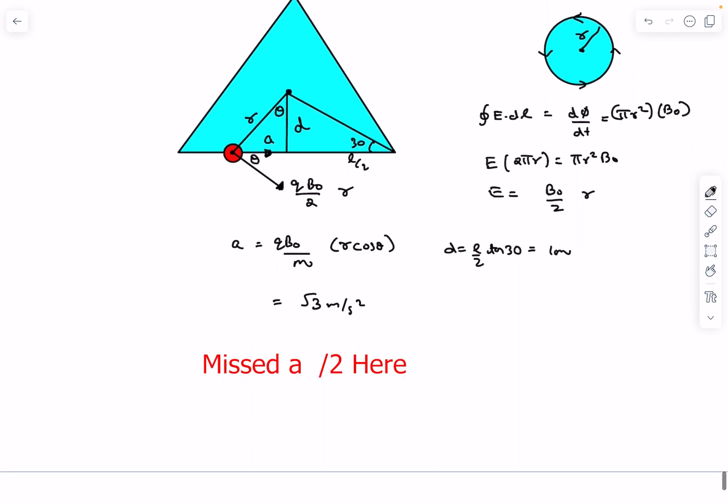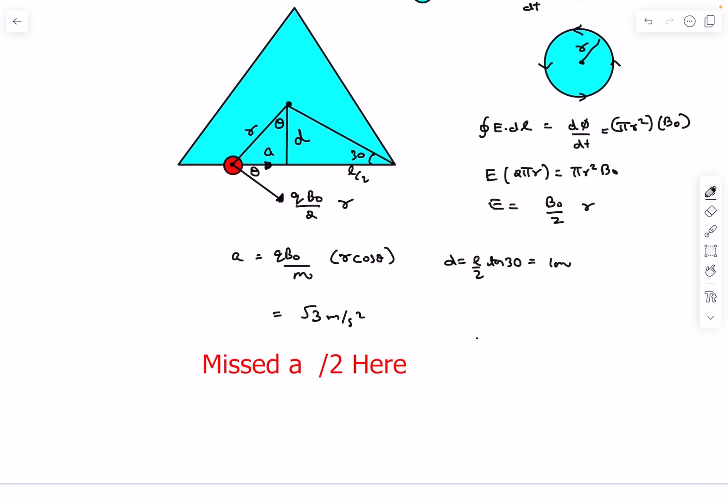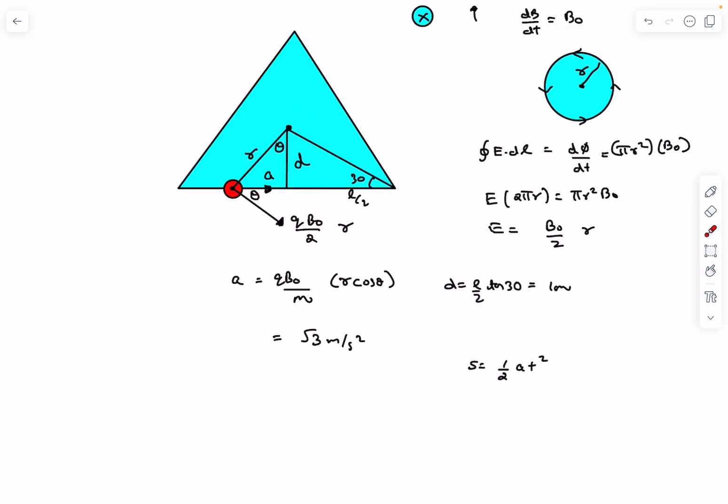So now we can simply apply, as it is a constant, we can use kinematics. So we can say that the displacement is equal to a t². Here keep in mind one thing guys: don't make the mistake of taking s as equal to 0. Physically yes, the displacement of the particle is 0 because it's going and coming back at the same place.